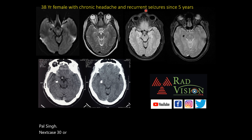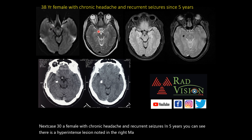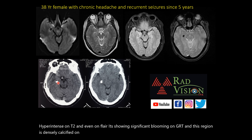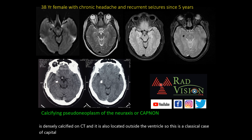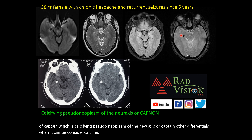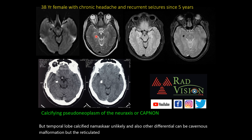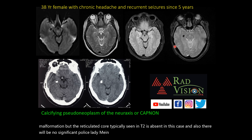Next case: a 38-year female with chronic headache and recurrent seizures for 5 years. There is a hypointense lesion in the right amygdala and hippocampus, heterogeneously hypointense on T2 and FLAIR, with significant blooming on GRE. It is densely calcified on CT and located outside the ventricle. This is a classical case of CAPNON — calcifying pseudoneoplasm of the neuroaxis. Differentials include calcified granuloma and cavernous malformation, though the reticulated core typical of T2 and significant perilesional edema are absent.